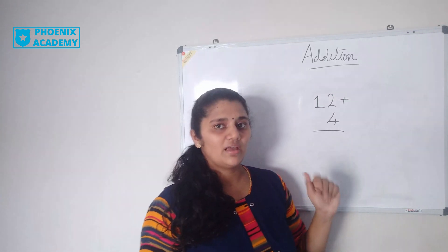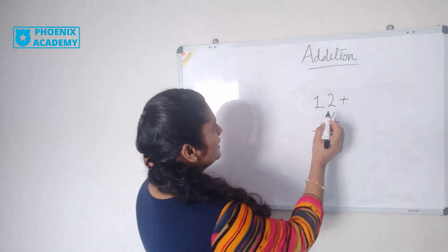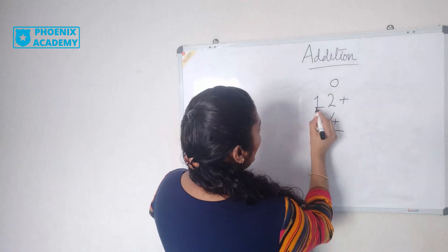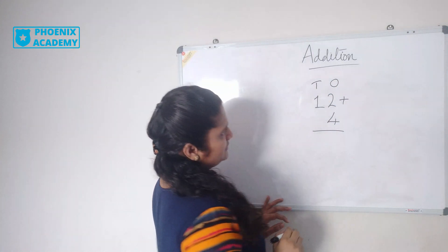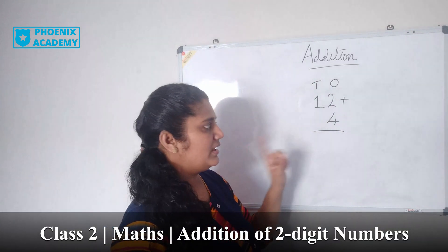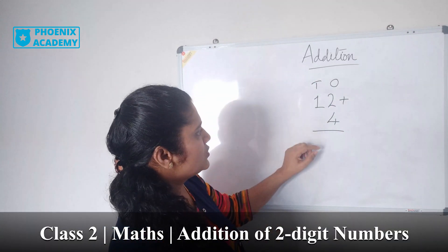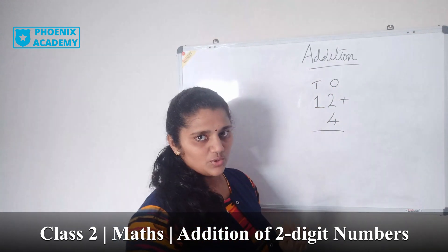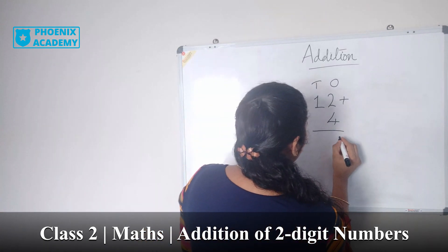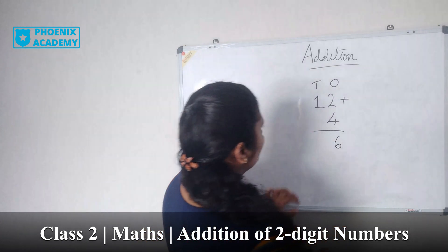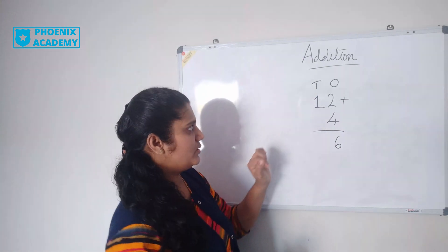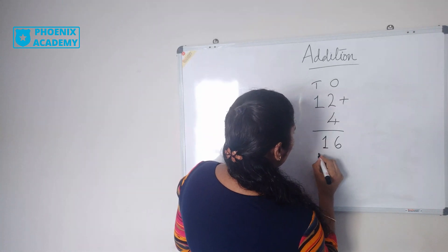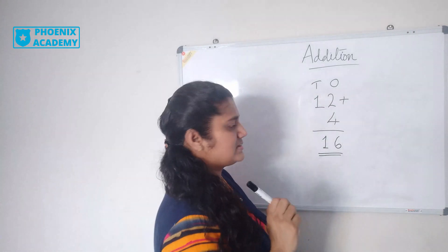Now I'll show you the second method. In 12, the 2 is in the ones place and 1 is in the tens place. The 4 is in the ones place; we have only one digit. Let's add the ones first: 2 plus 4 is 6. We don't have any value in the tens place for 4, so we write 1 here. The answer is 16.